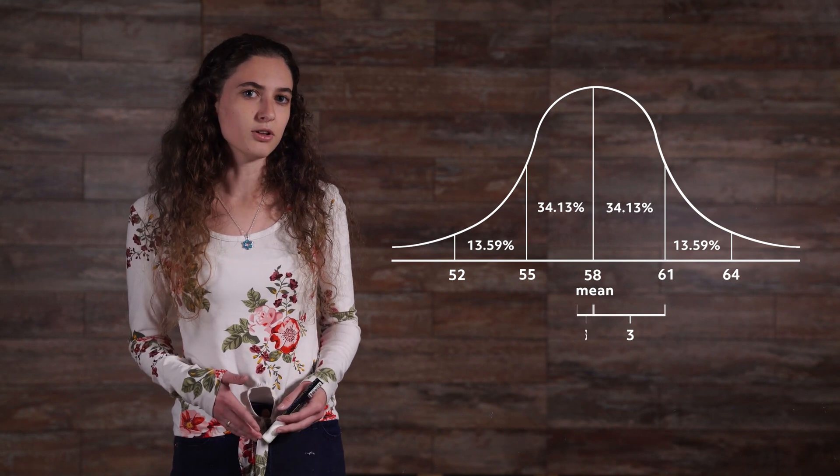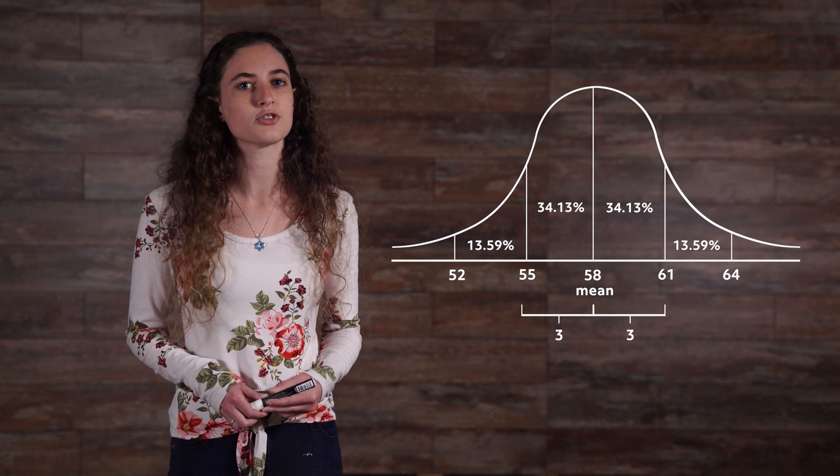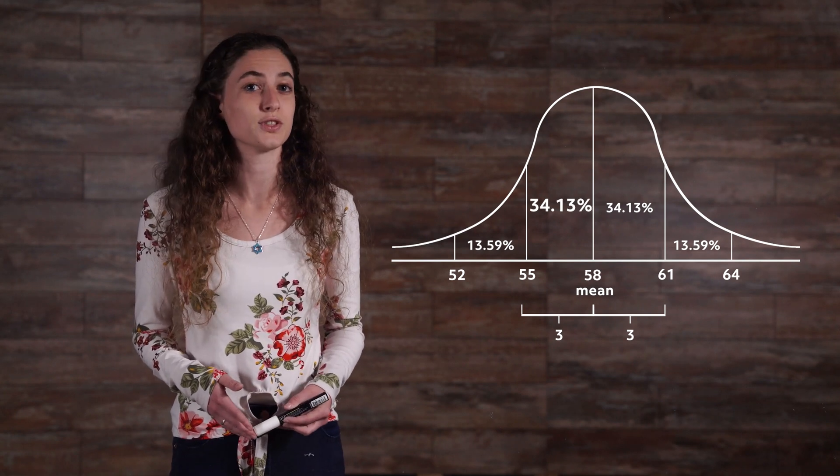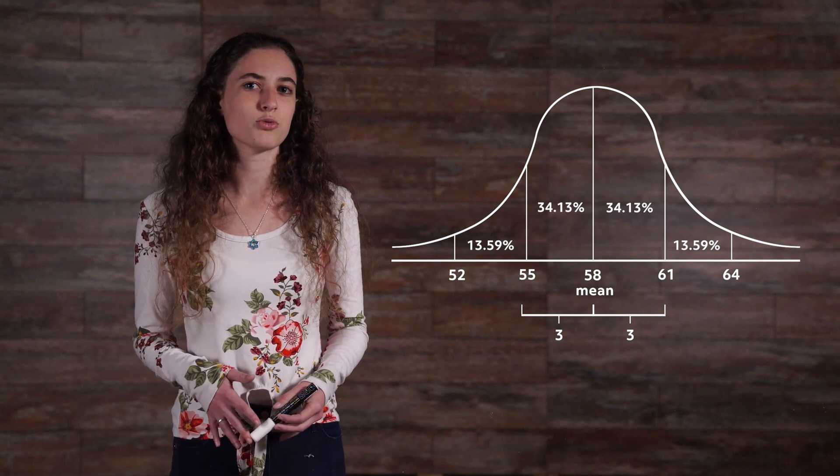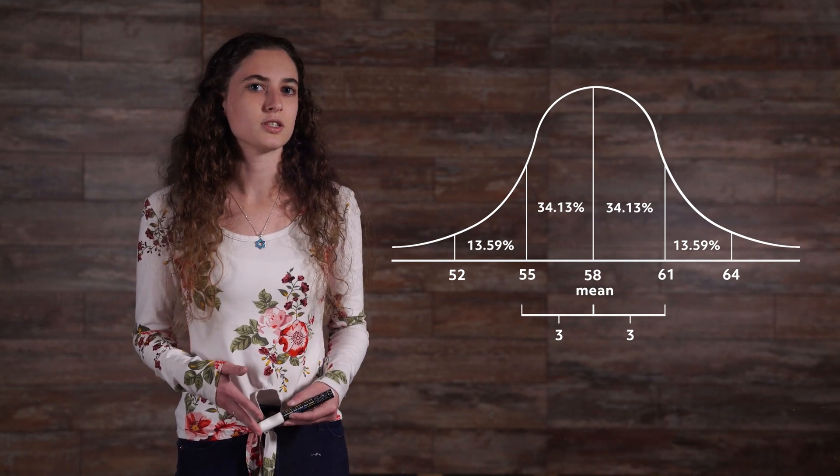If we go back to the middle and move left until we reach a vertical line, we've moved one standard deviation below the mean, which accounts for another 34% or so of the students. So we can say that over 68% of the students are within 3 inches, our standard deviation, of the mean height for all the students.